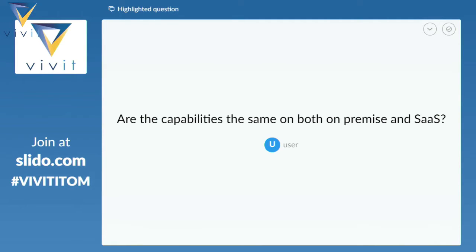Are the capabilities the same on both on-prem and SaaS? Is there anything someone needs to be aware of that might go away when moving to SaaS? Not at all — it's one and the same, so it makes it really simple to move around to different environments.